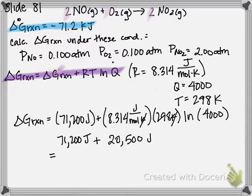So if you're paying attention, sorry about that. So it's negative 71,200 joules plus 20,500 joules, which should give you negative 50,700 joules, or if you want to convert it to kilojoules, negative 50.7 kJ.